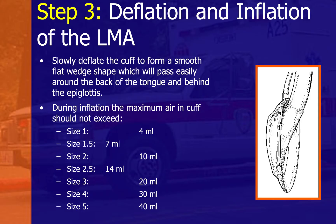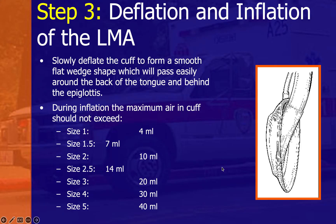For deflation and inflation: slowly inflate the cuff to form a smooth, flat shape that will pass easily around the back of the tongue and behind the epiglottis. Deflate the cuff prior to insertion to ease passage. During inflation, the maximum recommended air volume for the cuff should not be exceeded.